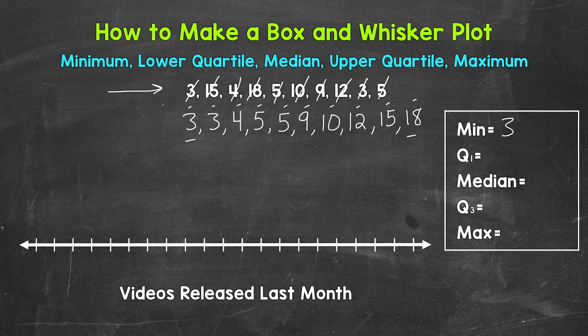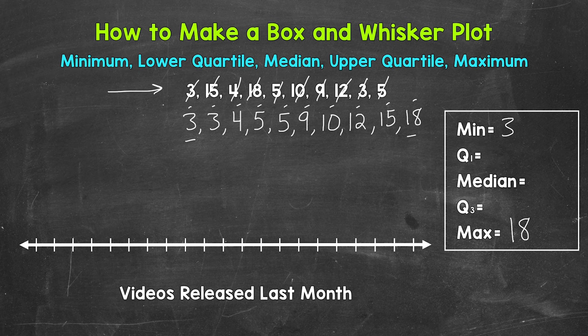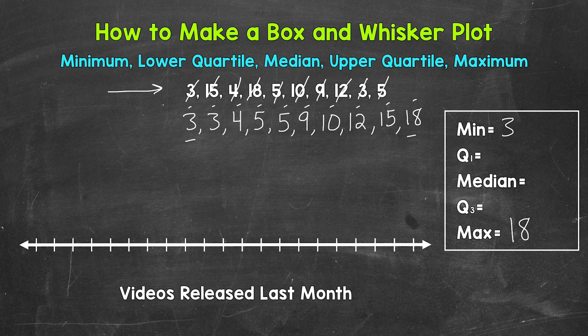Now let's find the median, so the middle point of the data, the 50th percentile. Since we have 10 numbers in the data set, we will have 5 numbers on each side. The median is right here in between the 5 and the 9. Since the median is between two numbers, we need to find the average or the middle point of those two numbers. That will be the median.